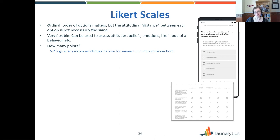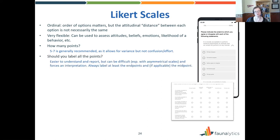Should you label all the points? My preference is to label them all — it helps people orient to the scale. But it's also possible to label just the endpoints, with blank dots in between. That works too, though it's a little more ambiguous. I'd recommend labeling the midpoint as well — 'neutral' or 'neither agree nor disagree' — to keep the most important points clear. There's also a difference between a symmetrical scale like 'strongly agree' to 'strongly disagree,' and an asymmetrical scale from 'not at all' to 'extremely.' Asymmetrical means you're giving more psychological room to one end of the scale than the other.